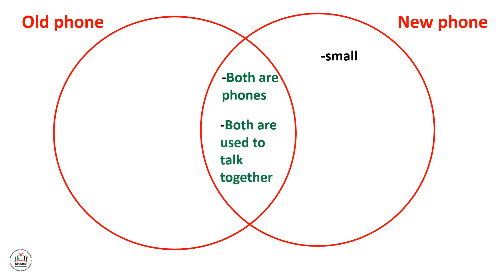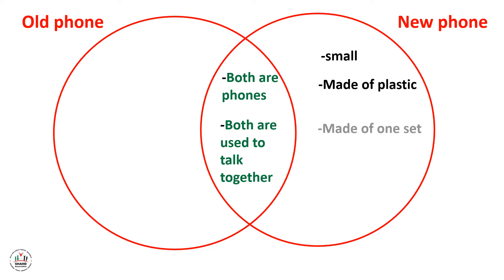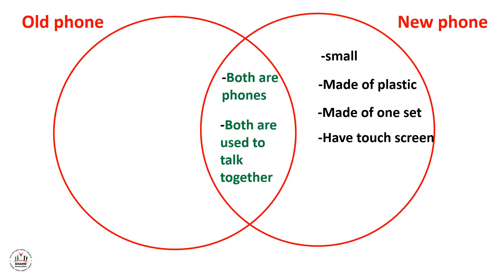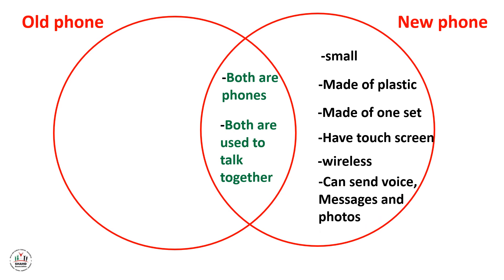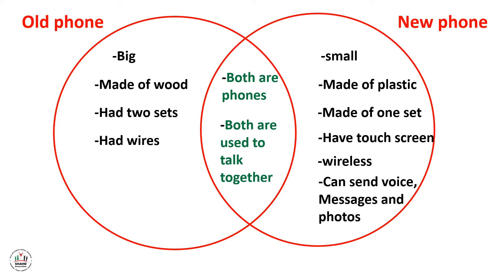New phones are small, made of plastic, made of one set, have a touch screen, are wireless, and can send voice messages and photos. While old phones were big, made of wood, had two sets, had wires, and could just transmit sounds.